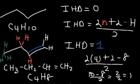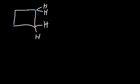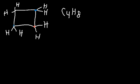Now what about a ring? What is the index of hydrogen deficiency of a ring? Let's use cyclobutane. Carbon can only form 4 bonds. Each carbon in the ring already has 2 bonds attached to 2 carbon atoms, which means it has space for only 2 more hydrogens. So every carbon in this ring only has 2 hydrogens. Therefore, the chemical formula for cyclobutane is C4H8 — only 8 hydrogens — the exact same molecular formula as 1-butene. Therefore, this molecule has an index of hydrogen deficiency of 1. So a ring and a double bond both have an IHD value of 1.